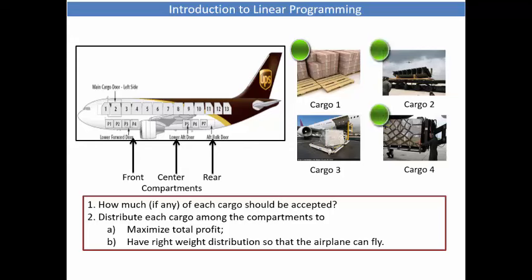We have four types of cargo to be loaded in an airplane. The cargo has the following attributes: weight, dimension, and profitability. The plane itself has three cargo compartments constrained by capacity and weight distribution, and this is so that the airplane can fly safely.